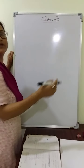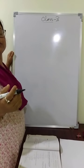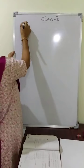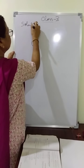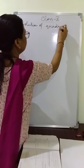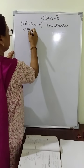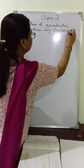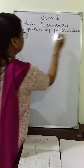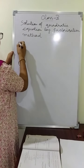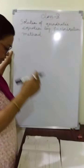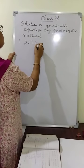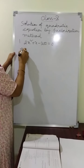Classical students, today again we will discuss how to solve the quadratic equation by factorization method. That is, solution of quadratic equation by factorization method. Let us take an example where you get 2x squared plus x minus 300 equal to 0.